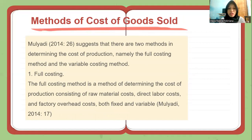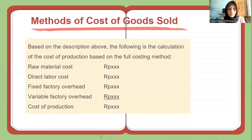Based on Mulyadi, there are two methods in determining the cost of production: the full costing method and the variable costing method. The full costing method is a method of determining the cost of production consisting of raw material costs, direct labor costs, and factory overhead costs, both fixed and variable. The calculation under the full costing method includes raw material costs, direct labor costs, fixed factory overhead, and variable factory overhead, resulting in the cost of production.